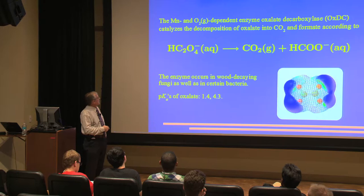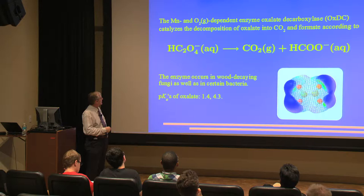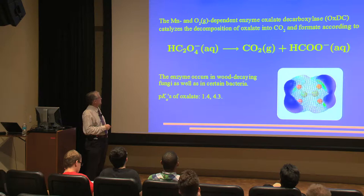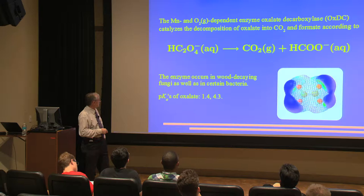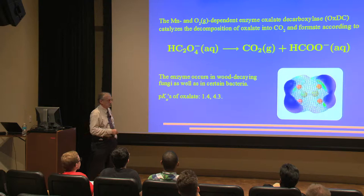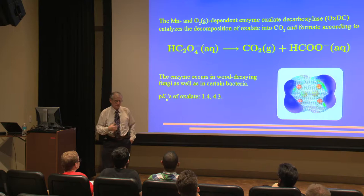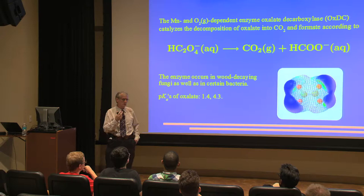Let's go back to oxalate decarboxylase. This is the reaction it catalyzes. We have the monoanion of oxalate with one proton left. It breaks down oxalate into carbon dioxide and formate. The enzyme occurs in wood decaying fungi and bacteria. Note the pKa of oxalate is 1.4 and 4.3, so if this is the substrate, the enzyme is only active at low pH. The optimum pH where it works is about pH 4.